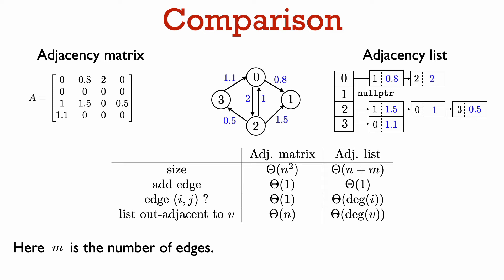Let's compare the adjacency matrix and adjacency list representations. Say we have a graph with n vertices and m edges. The adjacency matrix always takes memory proportional to n squared, regardless of the number of edges, because we store an n by n matrix. With the adjacency list, each edge appears in exactly one list in the directed case or in exactly two lists in the undirected case, so the total number of nodes in all the linked lists is proportional to the number of edges. We also need to store an array of size n regardless of the number of edges. So the total memory for an adjacency list is proportional to the number of vertices plus the number of edges.